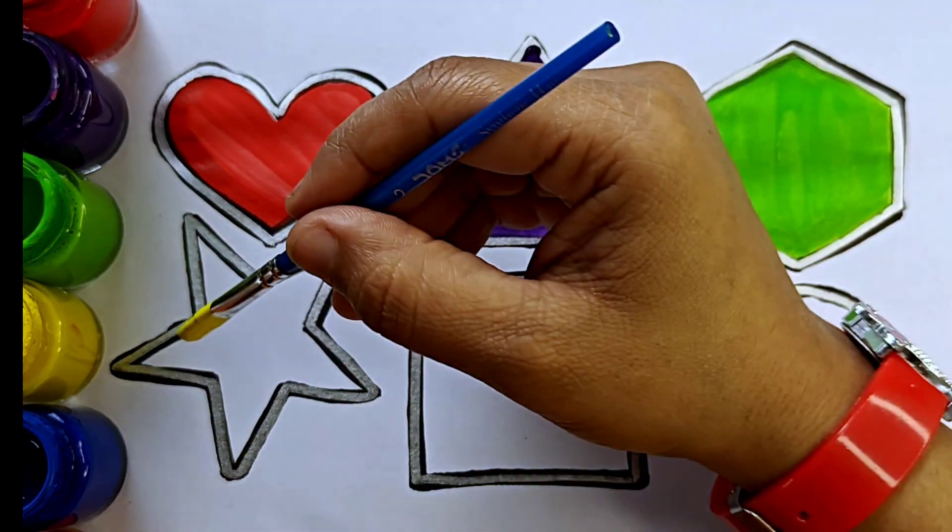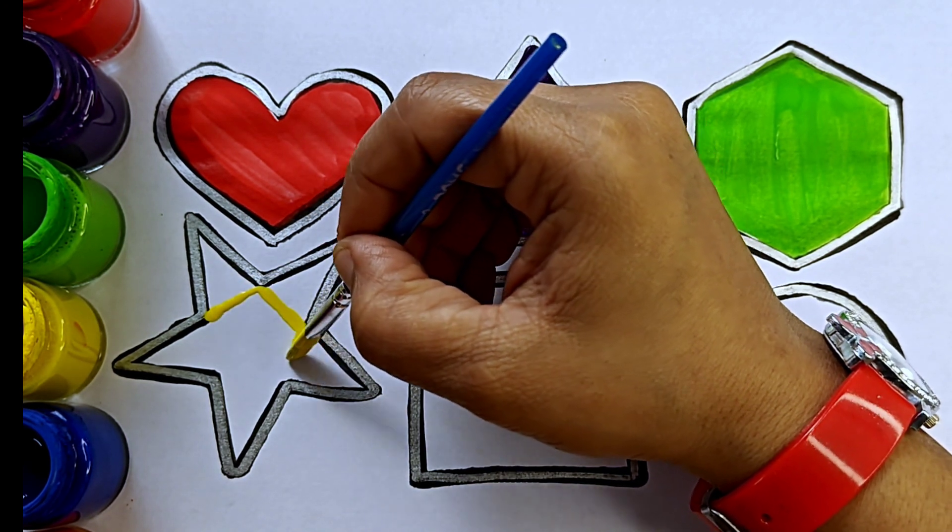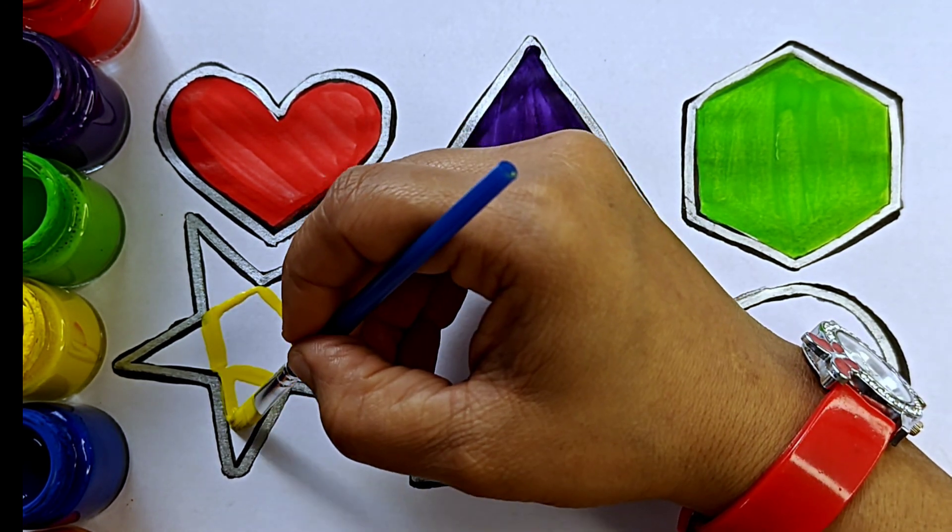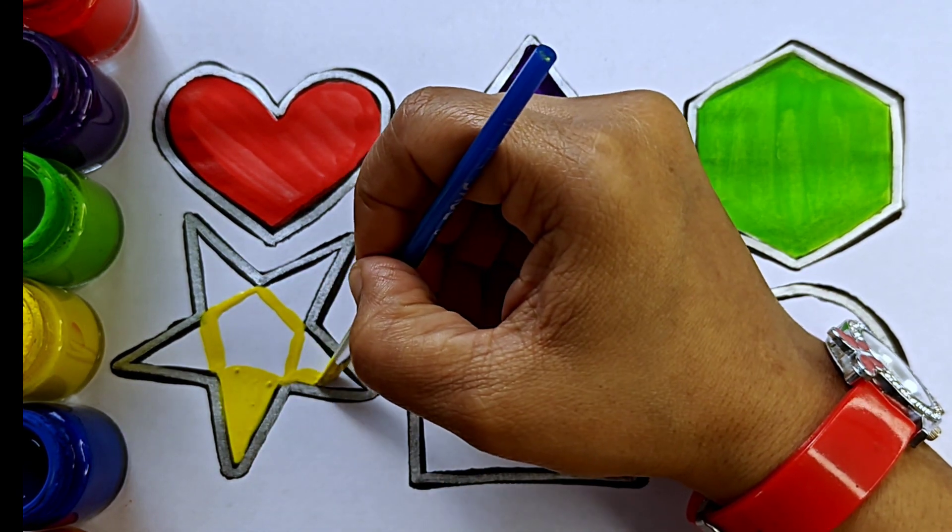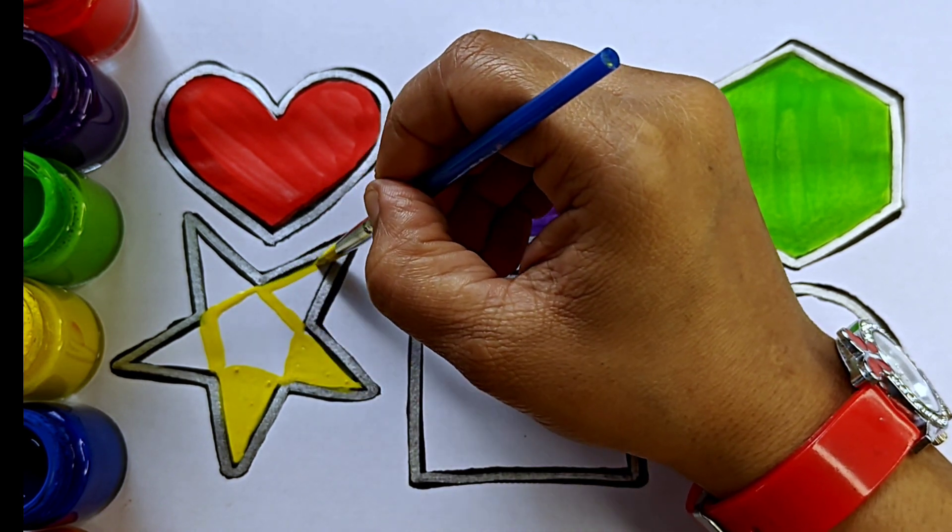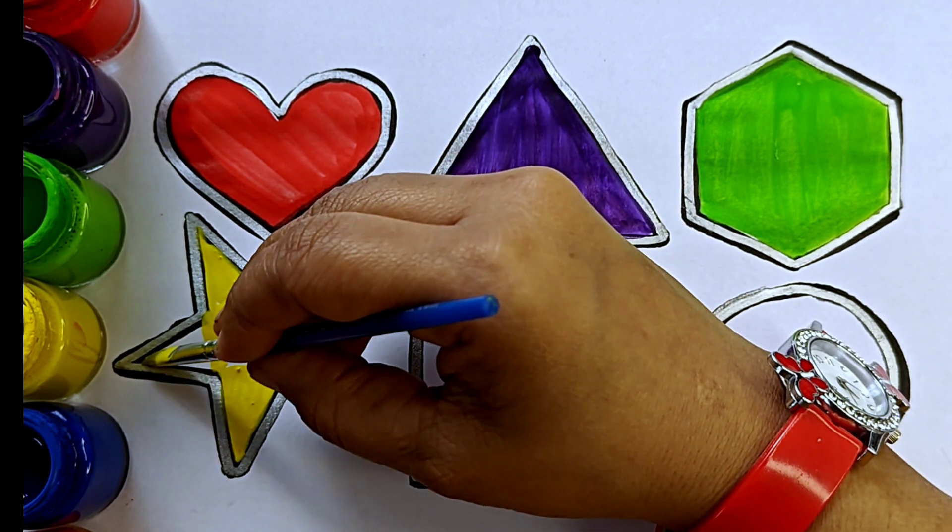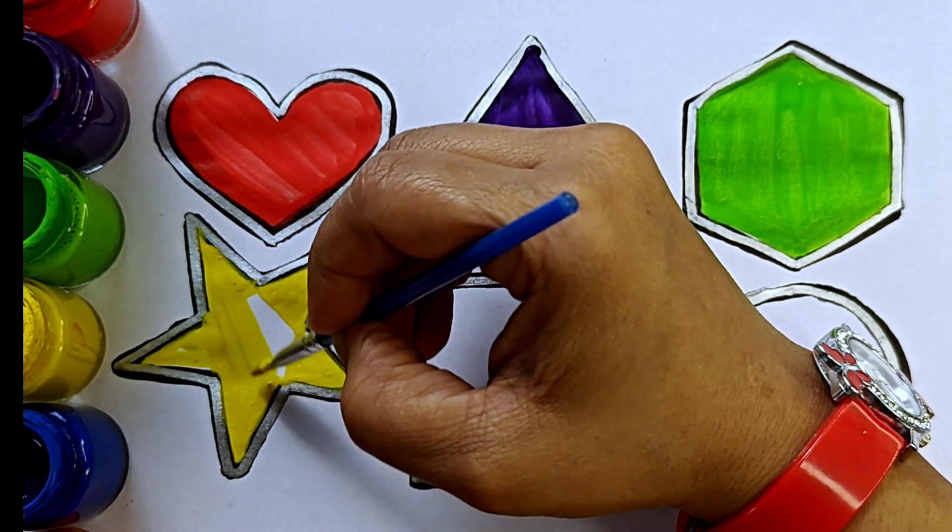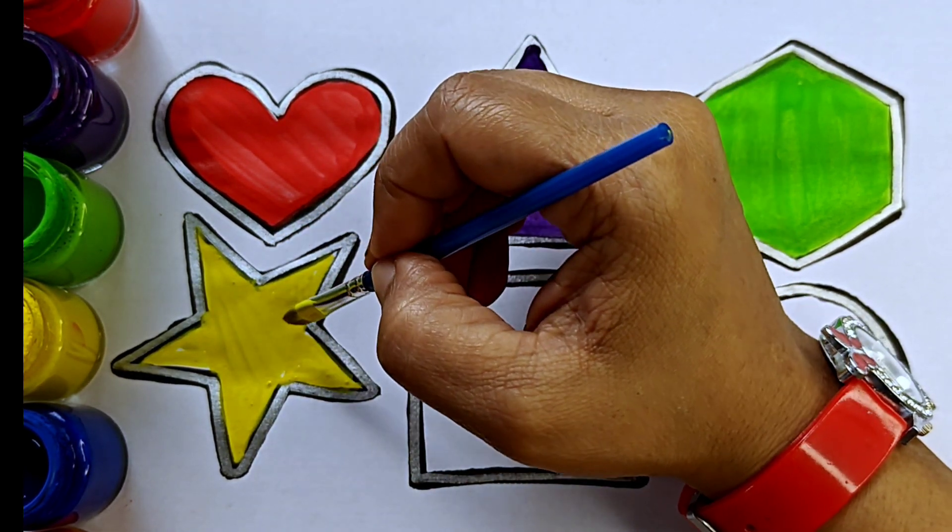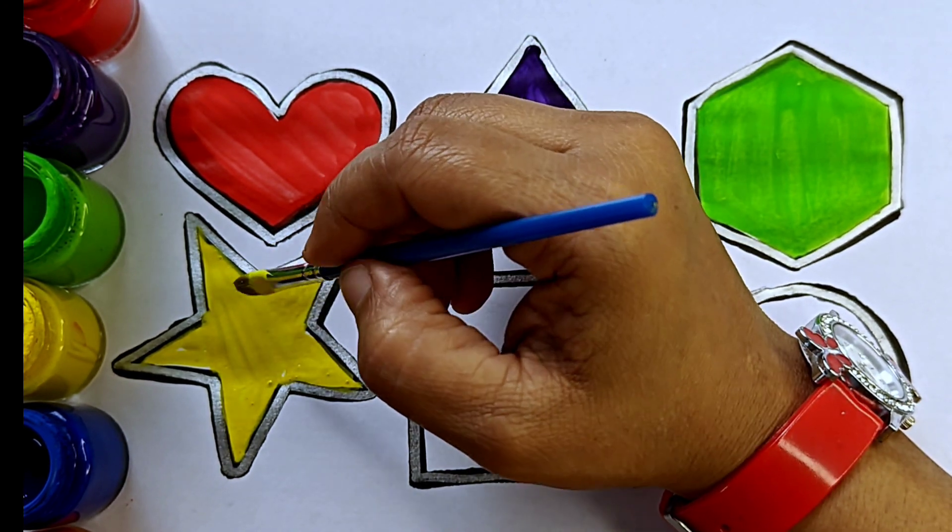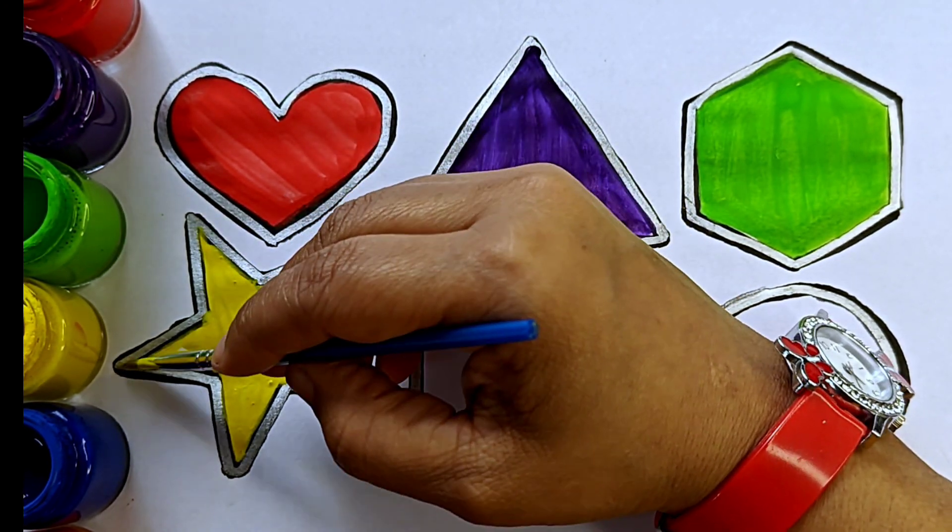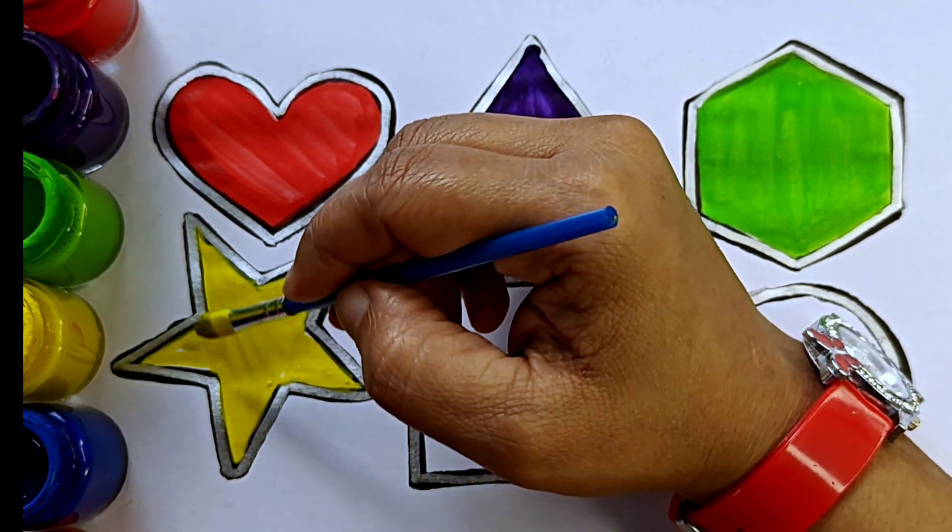Yellow. This is star, five pointed star. It has five points, one, two, three, four, five, five points.